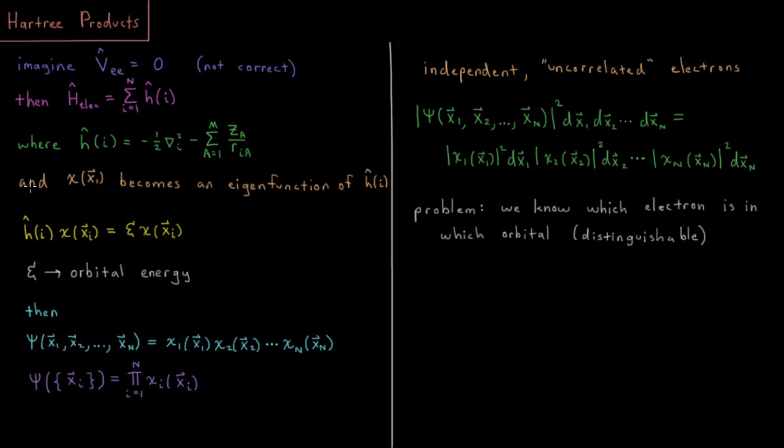If this were the case, then for each individual electron, there would be some spin orbital, which is an eigenfunction of that one-electron total energy operator.